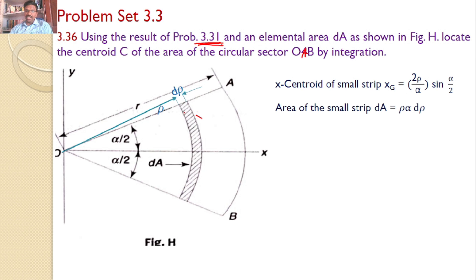The area of this small strip: since it is a sector, the width is equal to d-rho and the length is equal to rho times the total angle alpha. So the area element is rho·α·dρ.